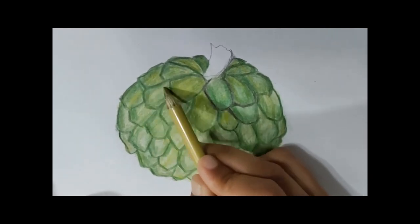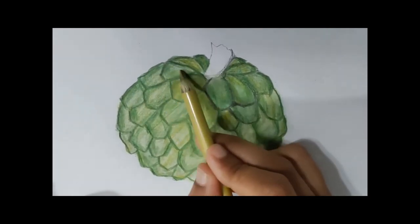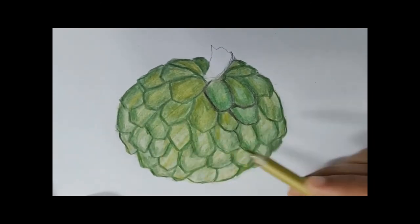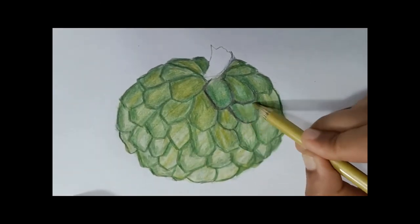I'm using a little bit yellow inside the scales and then you can use the black color for outline.